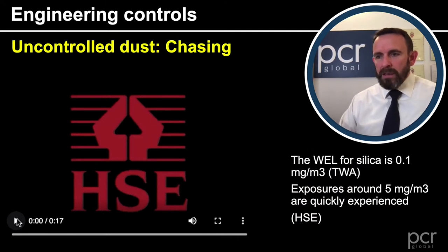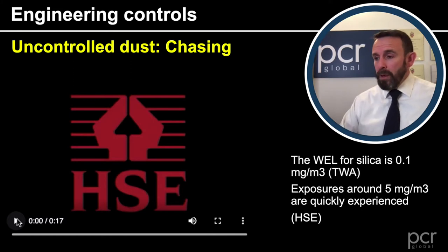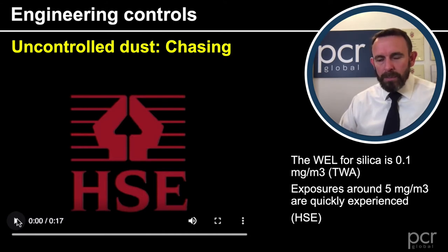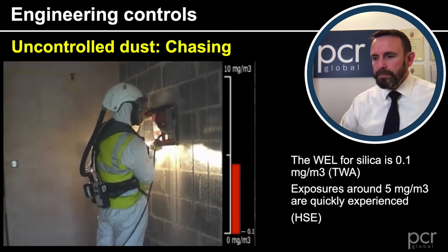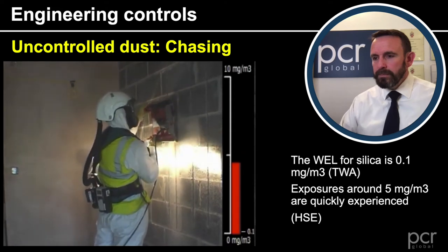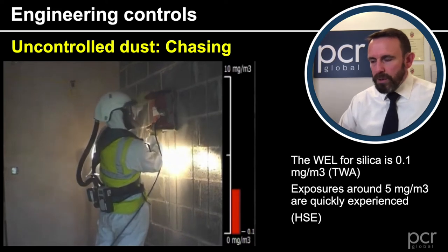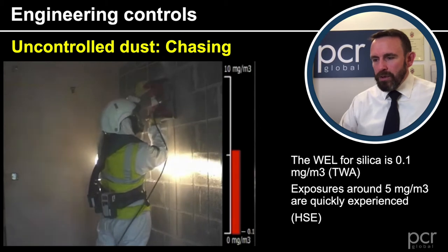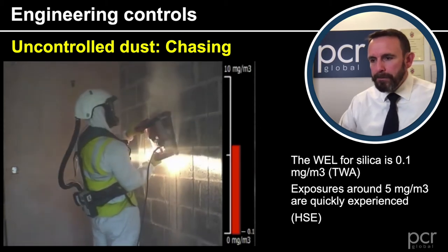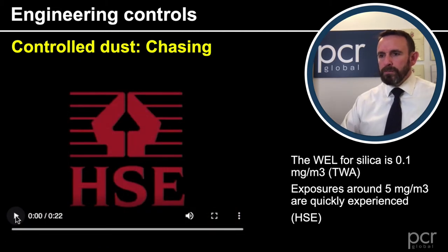We're now going to look at a video of uncontrolled dust release while chasing, remembering that silica has a WEL of 0.1 milligrams per cubic metre of air. Uncontrolled, you can see the dust in the room — the levels of dust quickly reaching over five. Then we see what happens when we use on-tool extraction, showing a big difference between uncontrolled and controlled.